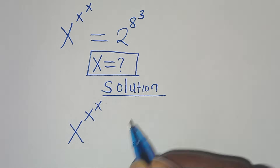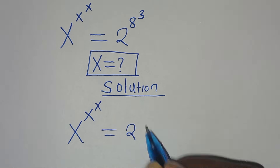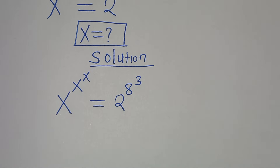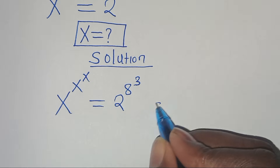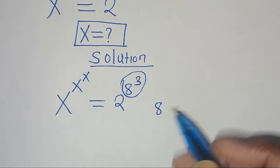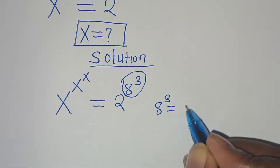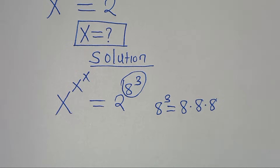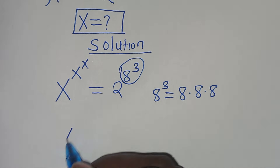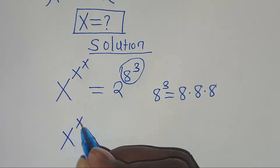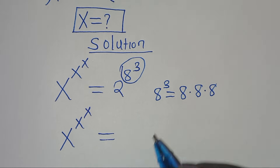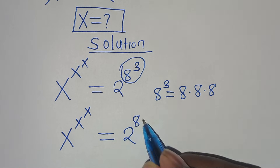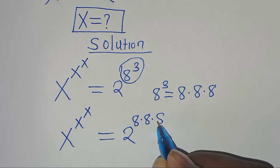We have x^(x^x) = 2^(8^3). Now, 8 to the power of 3 is the same as 8 multiplied by 8 multiplied by 8. So this implies x^(x^x) = 2^(8 × 8 × 8).